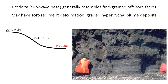The pro-delta is the deepest part of the delta, below the influence of waves or tides. Because it's far from the sediment and energy source, it's characterized by very fine-grained facies. The pro-delta will often resemble regular offshore facies and might be very difficult to tell apart — your only clues might be graded deposits from hyperpycnal plumes and the potential for soft sediment deformation. Without those indicators, and without seeing the overlying sediments, it can be very hard to identify a pro-delta versus a regular offshore environment.